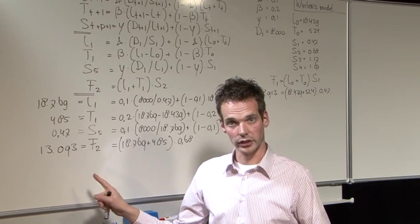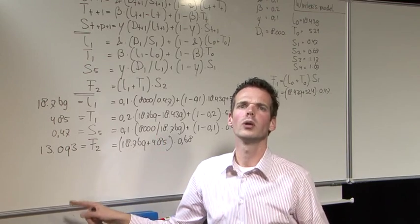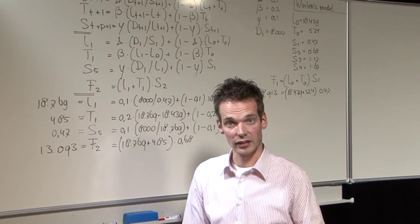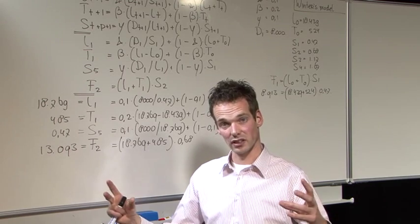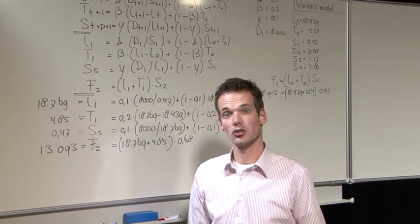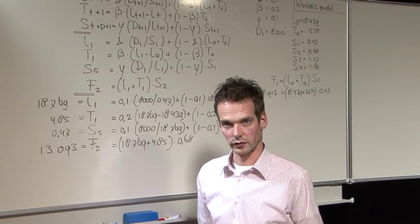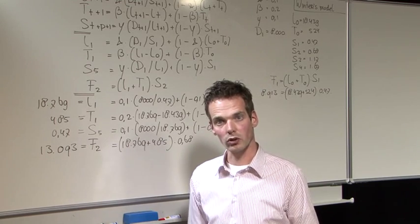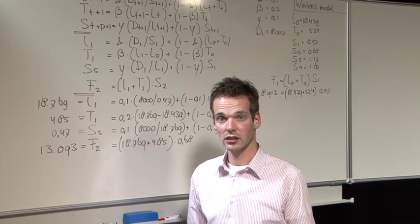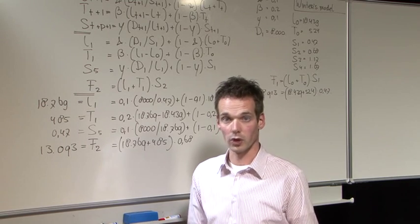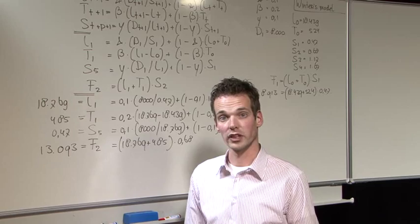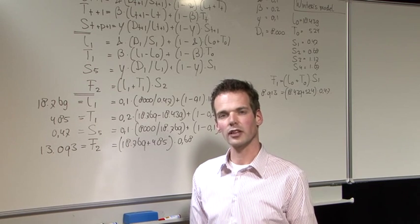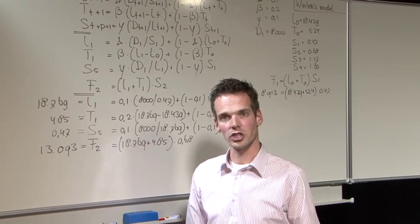Please recall earlier videos — this is on an aggregate level and will not be on a stock keeping unit level. This will be on a product family level, as when you increase the aggregate level it is better to forecast. This is the explanation about Winter's model. Winter's model can be used when there is a level, a trend, and seasonality. If you have only a level and a trend, you use Holt's model as explained in earlier videos. Thank you for watching. If you have any trouble with it, please contact me. I hope to see you again in later videos.